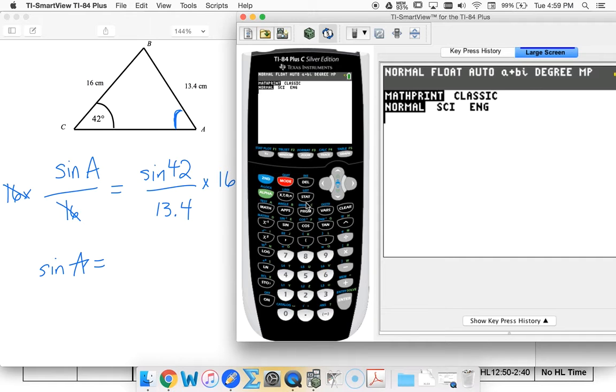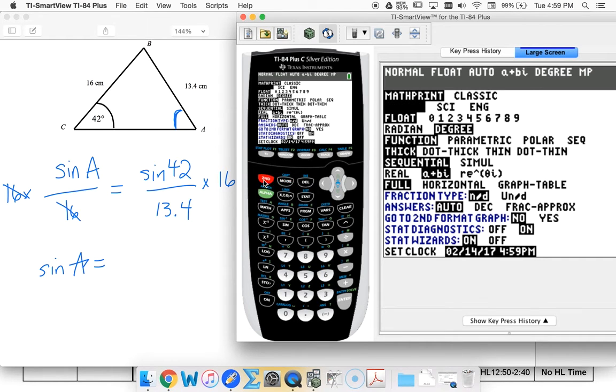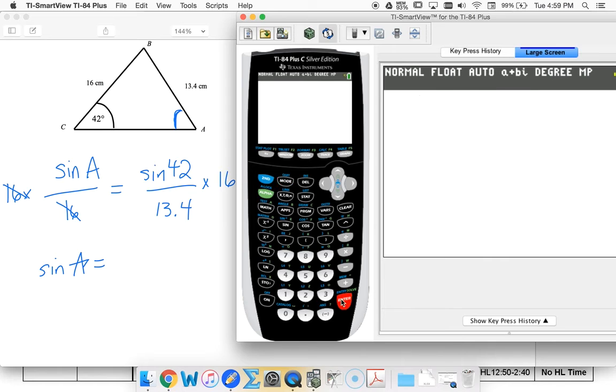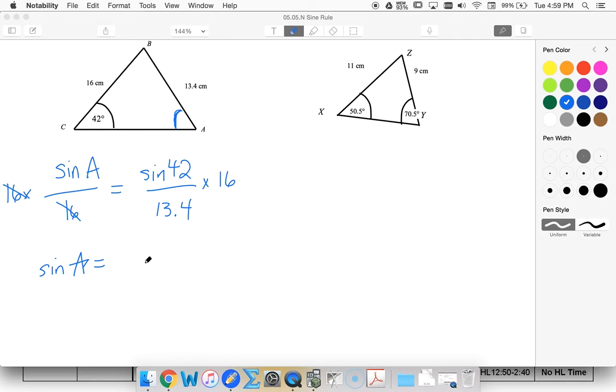Check my mode. Make sure I'm in degree mode. Yes. Okay. I get 0.79 dot dot dot. I'm not rounding this.